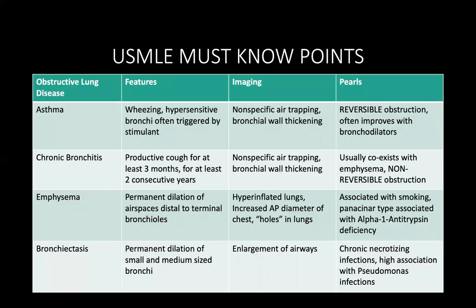USMLE must-know points: There are four types of obstructive lung disease. Asthma — reversible airway obstruction, wheezing, hypersensitive bronchi triggered by infection; nonspecific air trapping and bronchial wall thickening on imaging; improves with bronchodilators. Chronic bronchitis — productive cough for at least three months for two consecutive years; nonspecific imaging; coexists with emphysema; non-reversible. Emphysema — permanent dilation of air spaces distal to terminal bronchioles; hyperinflated lungs, increased AP diameter, holes on CT; strongly associated with smoking; panacinar type linked to alpha-1 antitrypsin deficiency and IV methylphenidate. Bronchiectasis — permanent dilation of small and medium-sized bronchi; airway enlargement on imaging; chronic necrotizing infection with high association with pseudomonas.